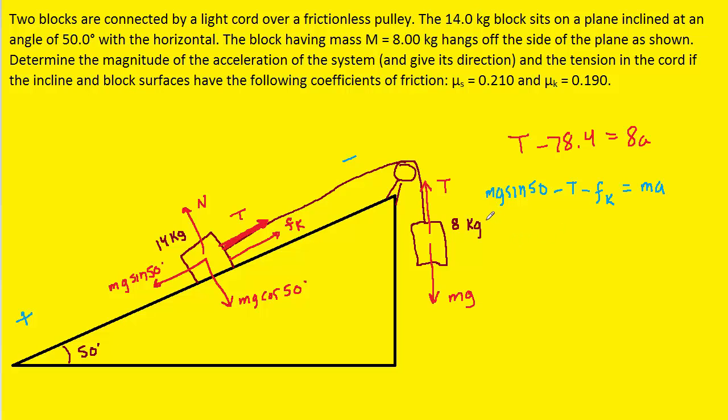Now, we have the mass of that block, it's 14 and g is 9.8, so why don't we plug those in. And then we can plug into our calculator 14 times 9.8 times the sine of 50, and that gives us about 105.1 minus the tension minus the kinetic frictional force equals the mass times the acceleration.